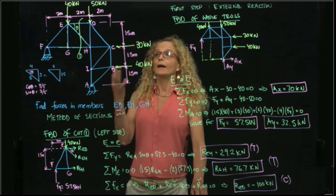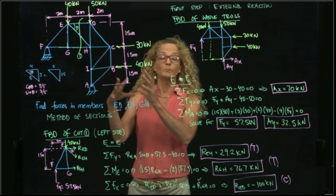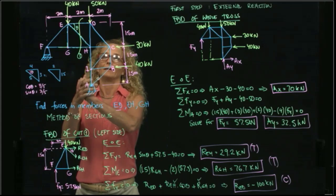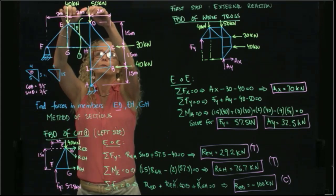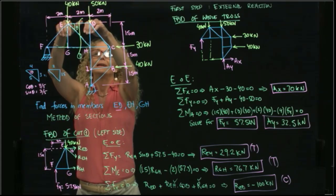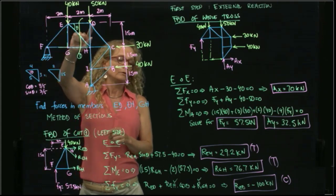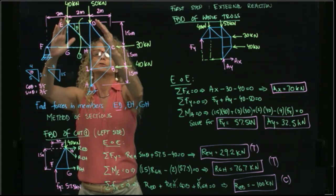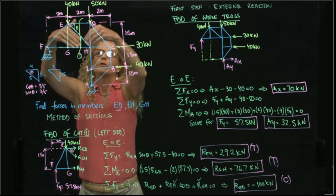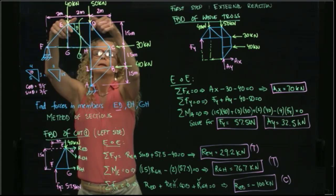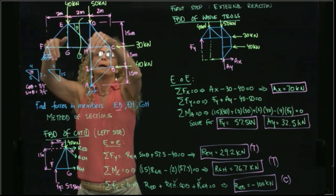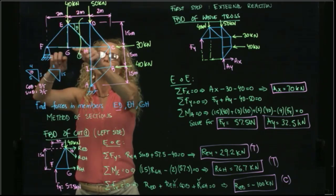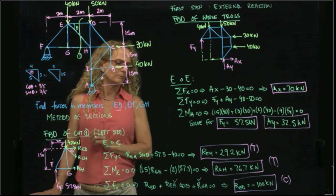It's always important to verify the results make physical sense. The applied forces cause the top member ED to be in compression and the bottom member GH to be in tension — essentially the truss is bending, compressing the top members and extending the bottom ones. So the results make sense.